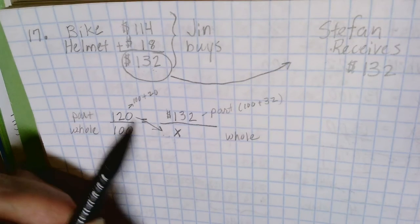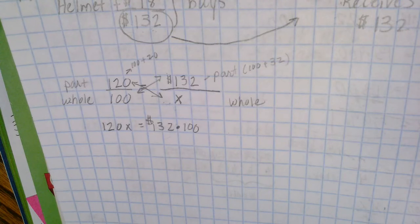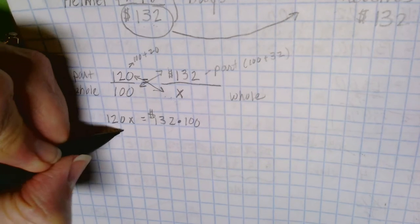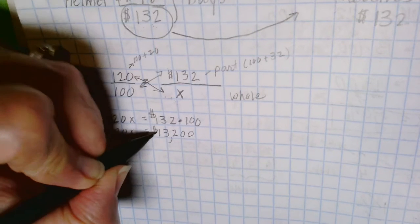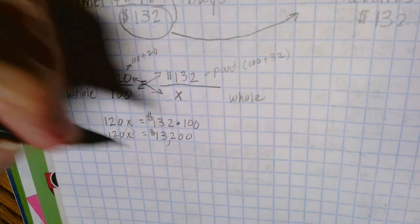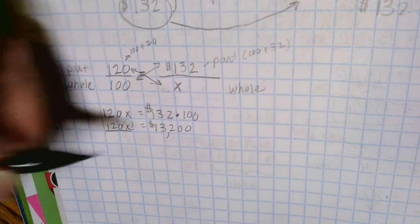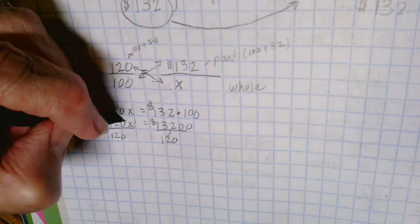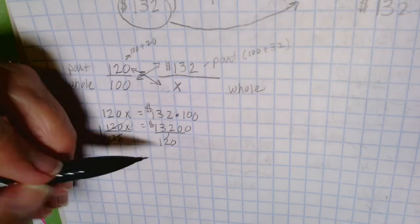Again, we're going to do cross multiplication. We have 120x is equal to 132 times 100. I have 120 times x over here, so I'm going to use my inverse operation from multiplication and I'm going to divide both sides by 120 because that will get me to a value of 1 on the left, and 1 times x is just x.